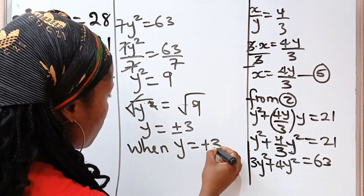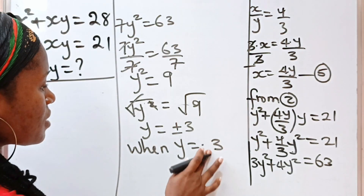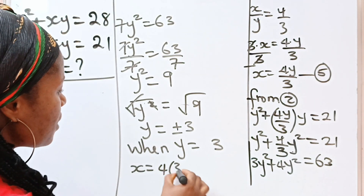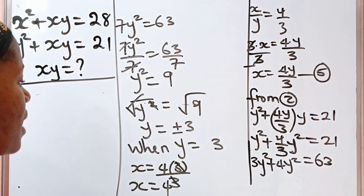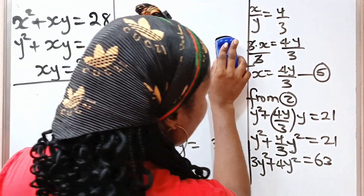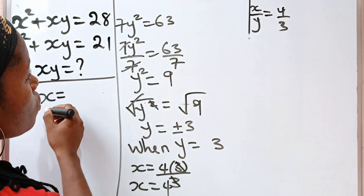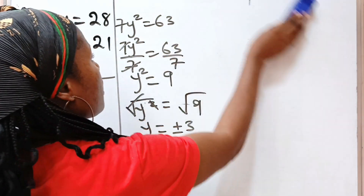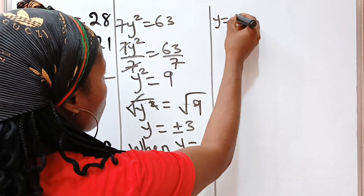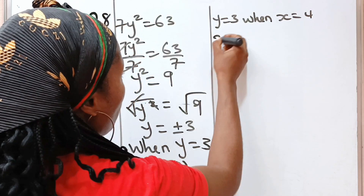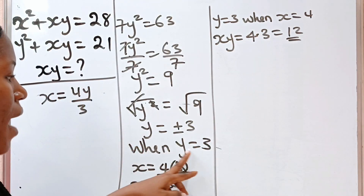For case 1, when y equals 3: recall that x equals 4y over 3, so x equals 4 times 3 divided by 3, which gives x equals 4. This means when y equals 3, x equals 4. Therefore, x multiplied by y equals 4 multiplied by 3, which is equal to 12.